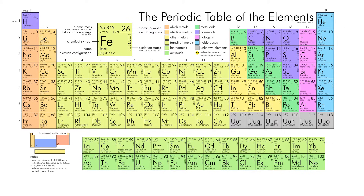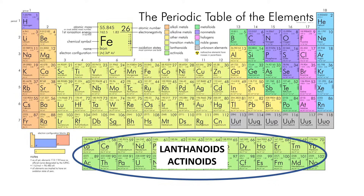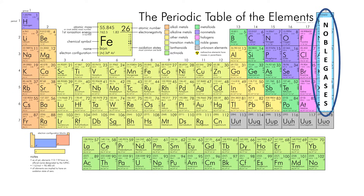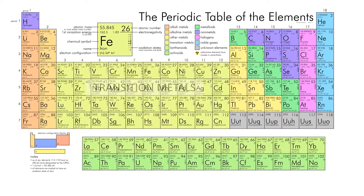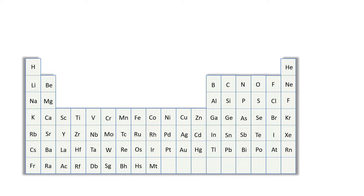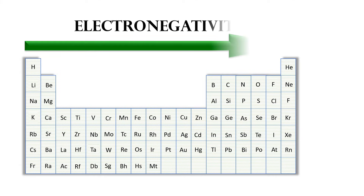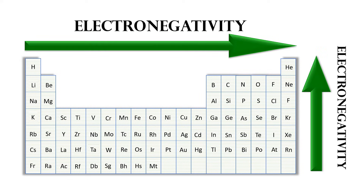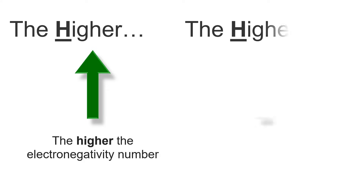Exceptions to the rule include the lanthanoids and actinoids, which don't really follow any trends, the noble gases which have complete valence electron shells and are perfectly stable, and the transition metals. Even though they do have electronegativity values, there is little change in their values because of their metallic properties that can also affect their attraction to electrons. So the general trend is: electronegativity increases as you go from left to right across a period and from the bottom to the top of a group. The higher the electronegativity number, the higher the ability to attract electrons.